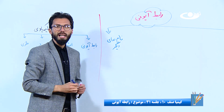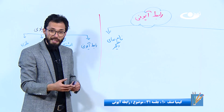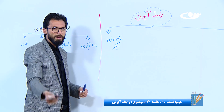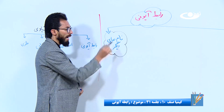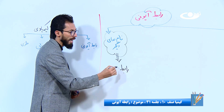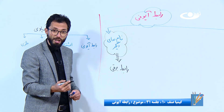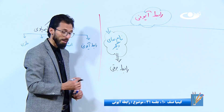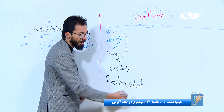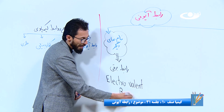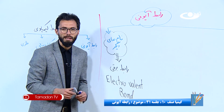اولین مطلبی که از شما پرسان می‌شود نام‌های دیگر رابطه آیونی است. آیا نام دیگه داره؟ بله، داره. به این رابطه می‌توانیم بگوییم رابطه برقی. نام دیگرش از روی نام انگلیسی‌اش است: رابطه الکتروولند (electrovalent bond).